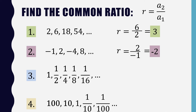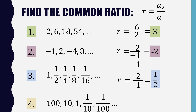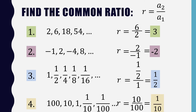For item 3 — 1, one-half, one-fourth, one-eighth, one-sixteenth — R equals one-half divided by 1, which is one-half. For item 4 — 100, 10, 1, one-tenth, one-hundredth — the second term 10 divided by the first term 100 gives R equal to one-tenth.